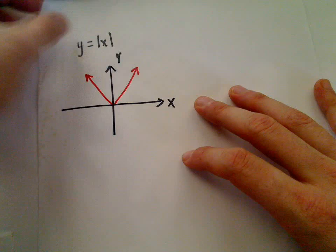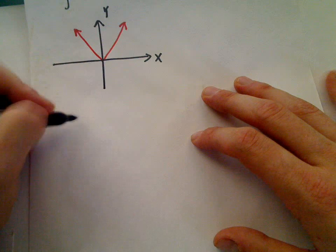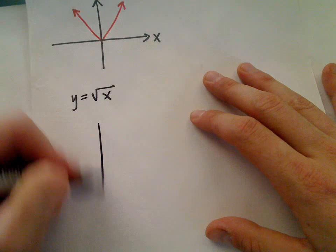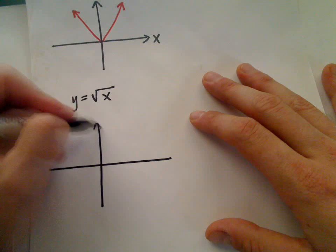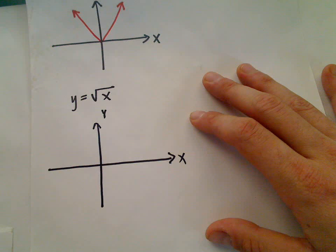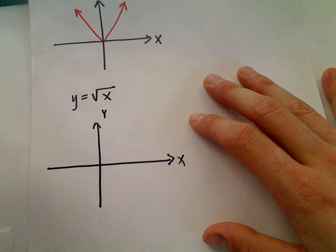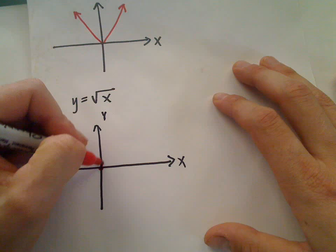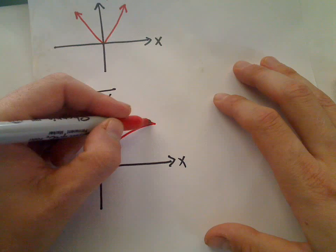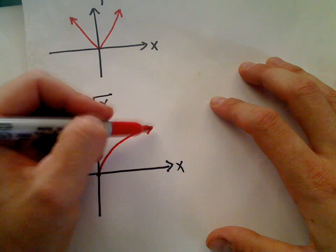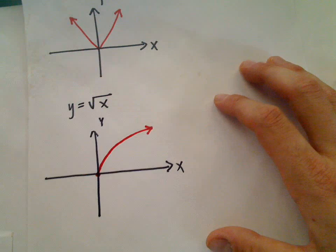If we graph y equals square root of x, and obviously this isn't every graph that you would ever need to know, but just a little refresher on some very common ones. Y equals square root of x is that curvy function. It keeps increasing as you move to the right, but it'll start moving a little bit slower.